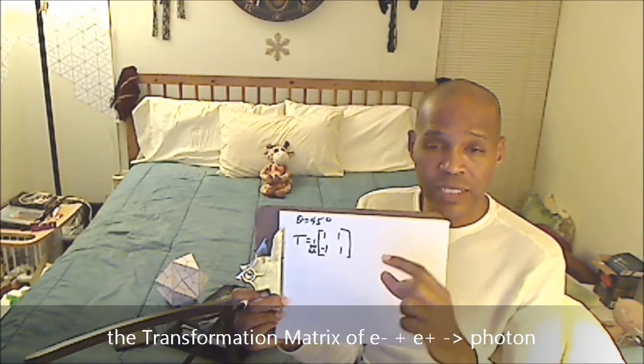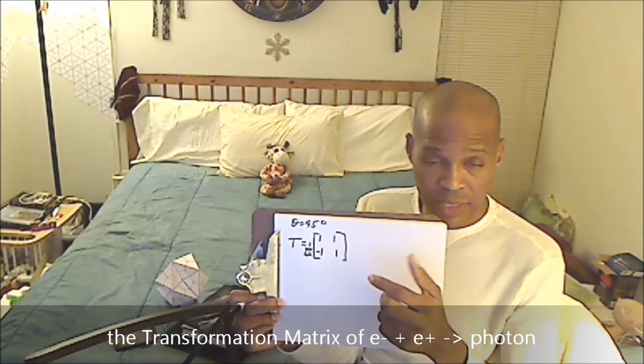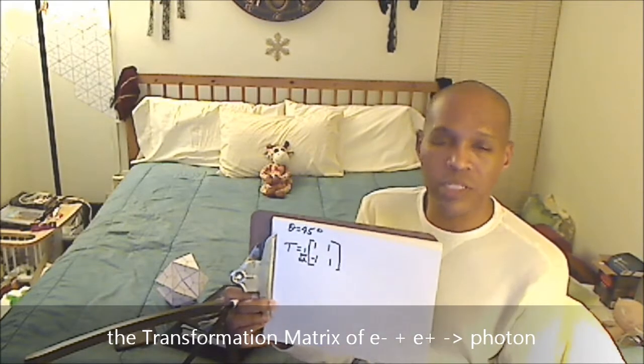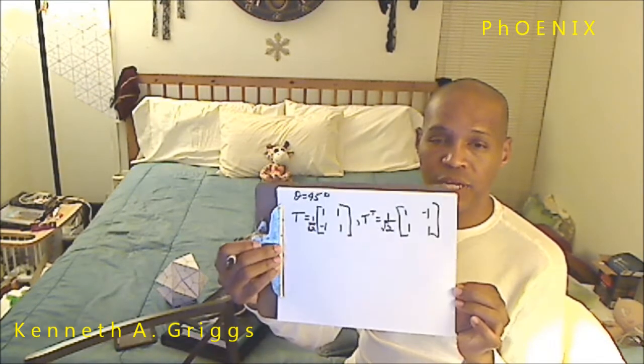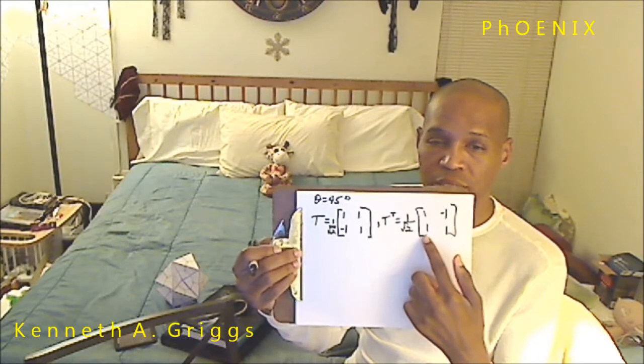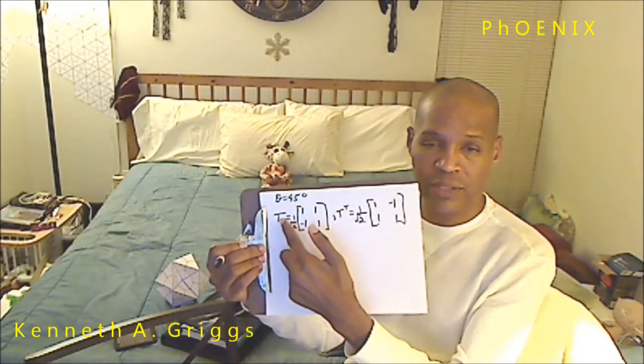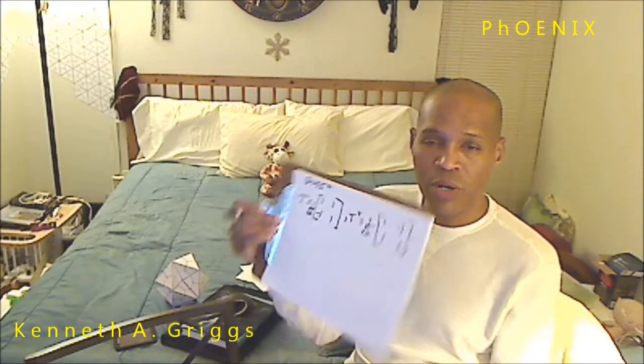When you substitute 45 degrees into the original T matrix of theta c, theta s, minus theta s, theta c, this is what you get. Now we're going to find its transpose, and then do all the multiplication to show that you get a photon out of it. Our transpose is 1 over the square root of 2 times the matrix 1, minus 1, 1, 1 — just flipping it across the diagonal.